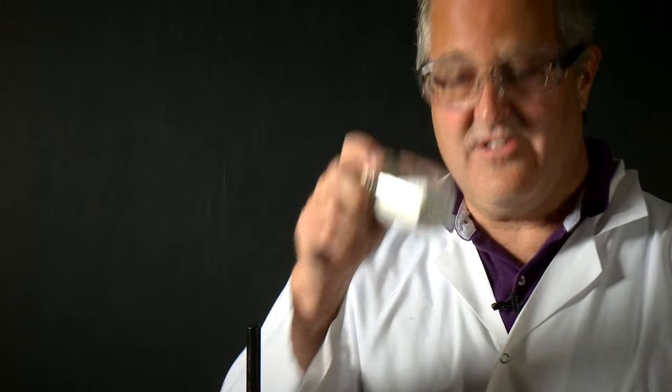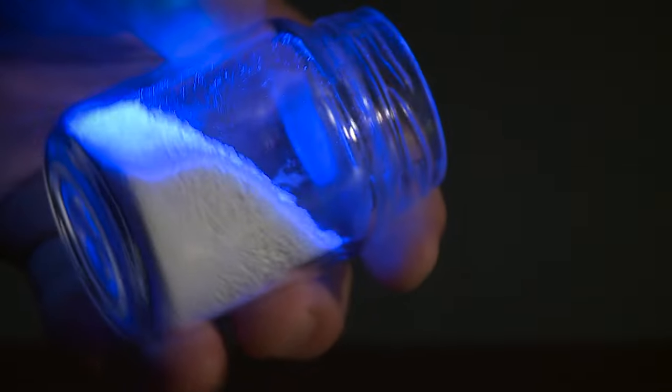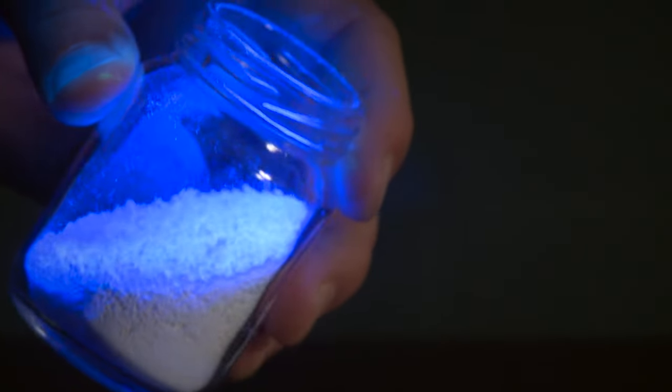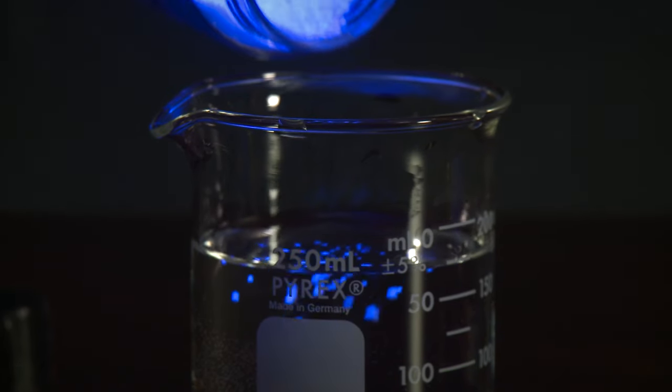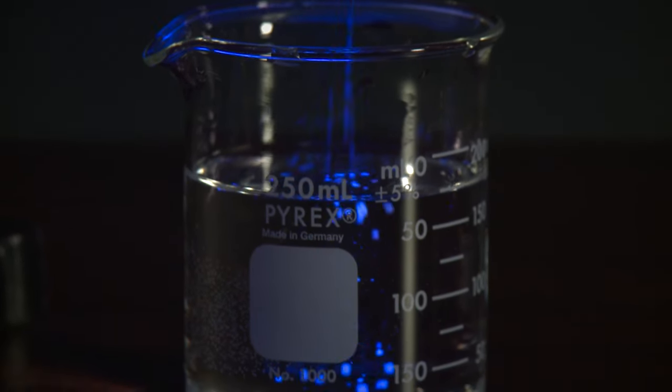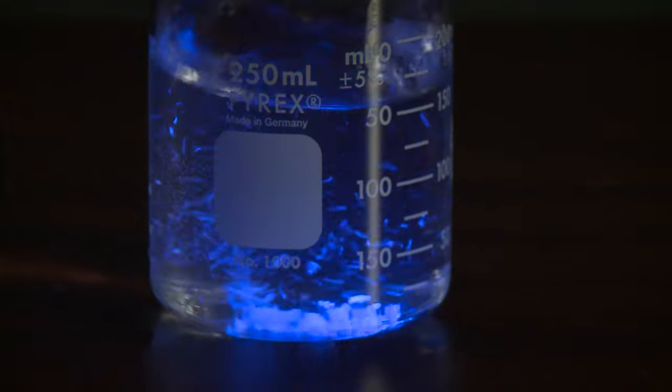This is a powder laundry detergent, and you can see that it glows really brightly blue, in quite a deep blue almost into the violet. And if I put a little bit of this in this water here, you can really see the fluorescence. I'll stir that up a little bit.